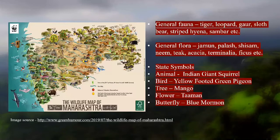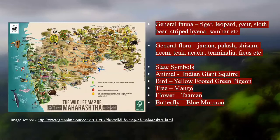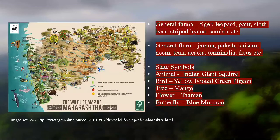As per fauna, we have tigers, leopards, and bears. For flora, trees like jamun, palash, and shisham are very common. State symbols include the Indian giant squirrel — shekru in Marathi — as state animal; the hariyal, yellow-footed green pigeon, as state bird; Mangifera indica, the mango, as state tree; and tamaind — Lagerstroemia speciosa — as state flower, a very beautiful pink-colored flower.